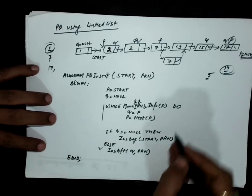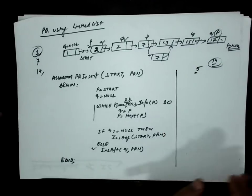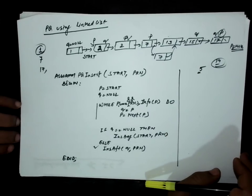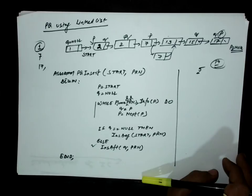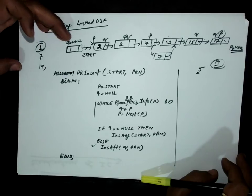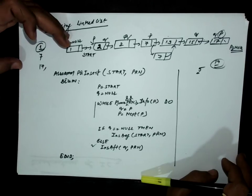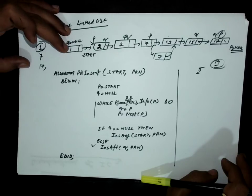Now for removal from the priority queue: since the first node always has the highest priority, the first node will always be removed first. For the removal operation in the priority queue, the first element is removed.